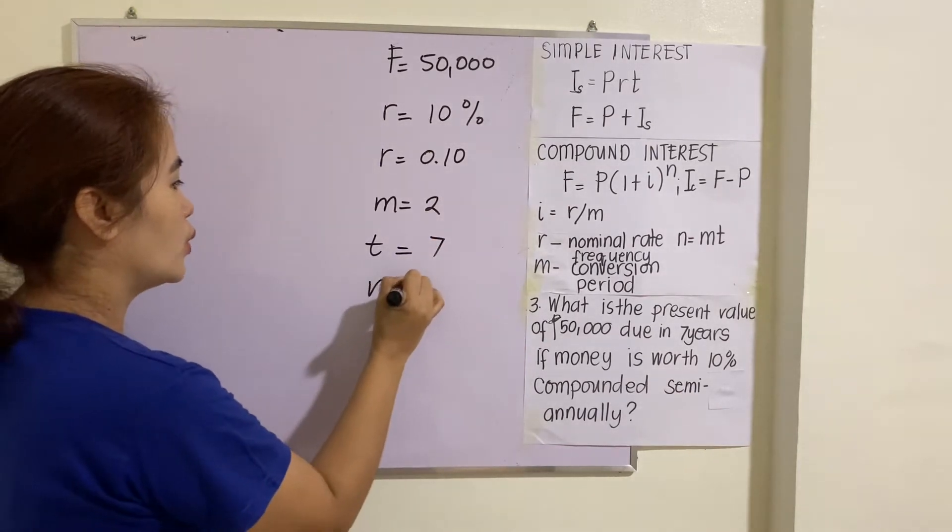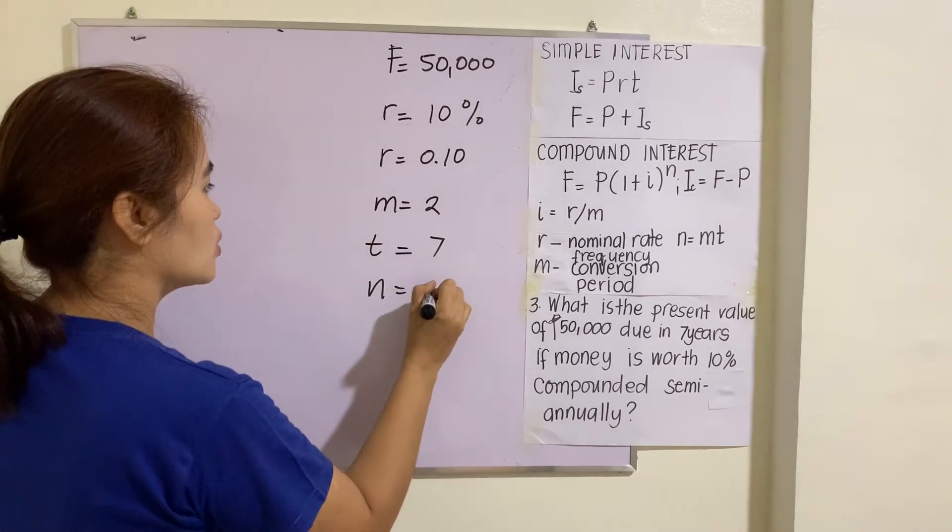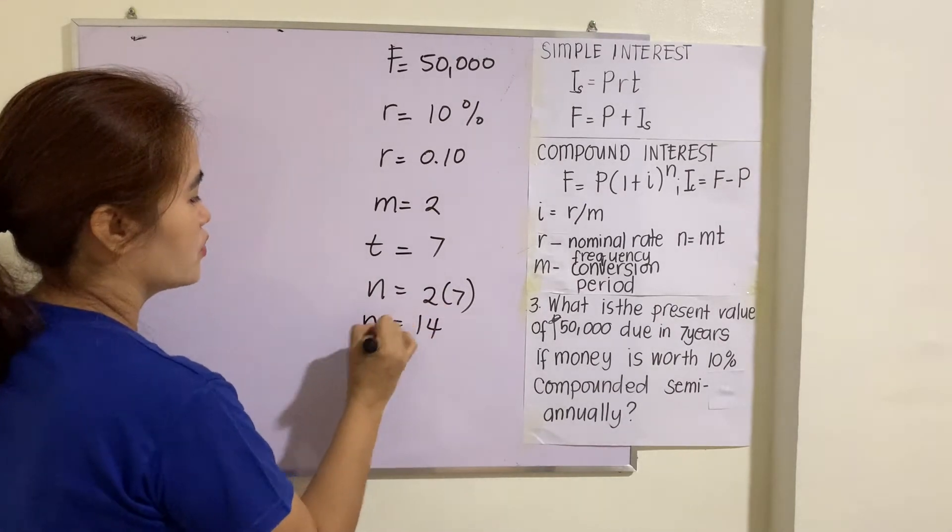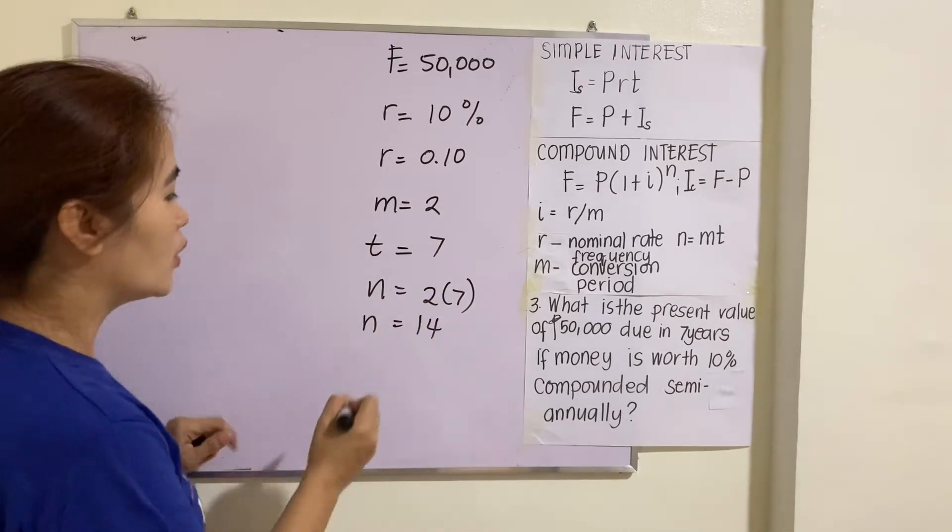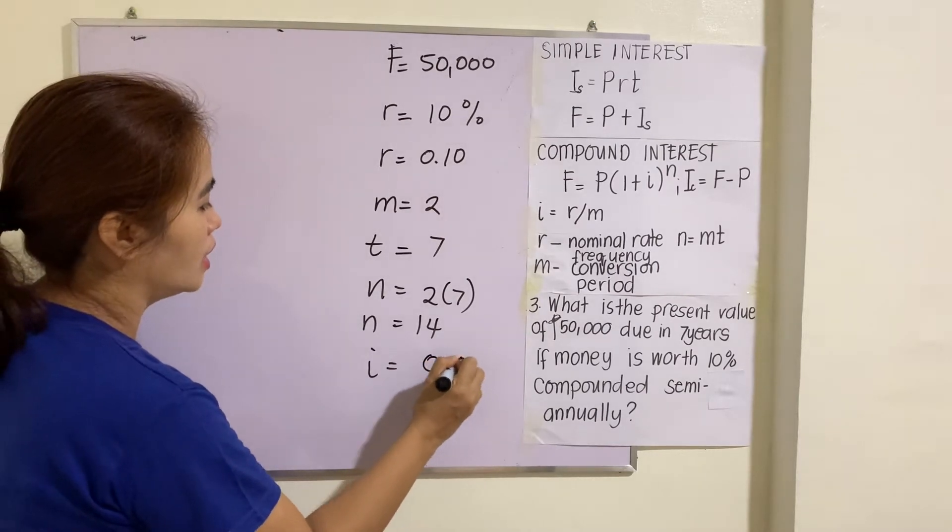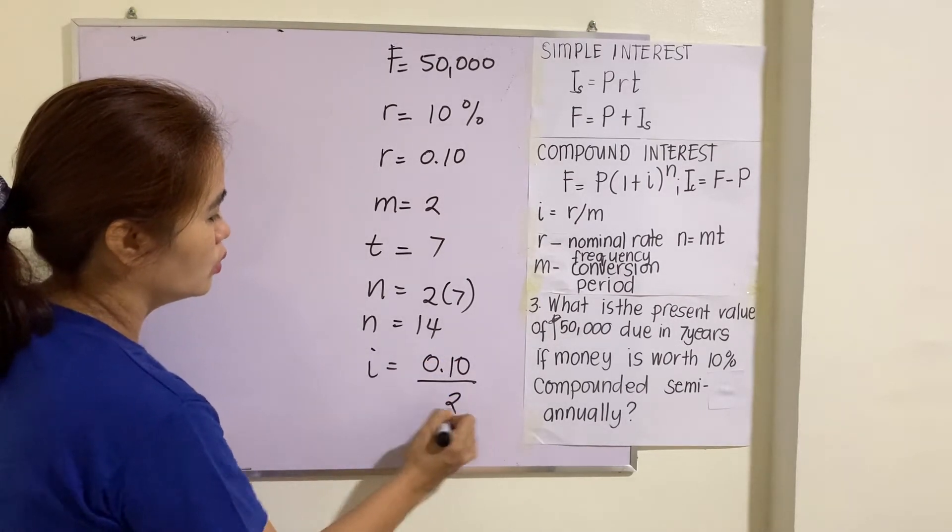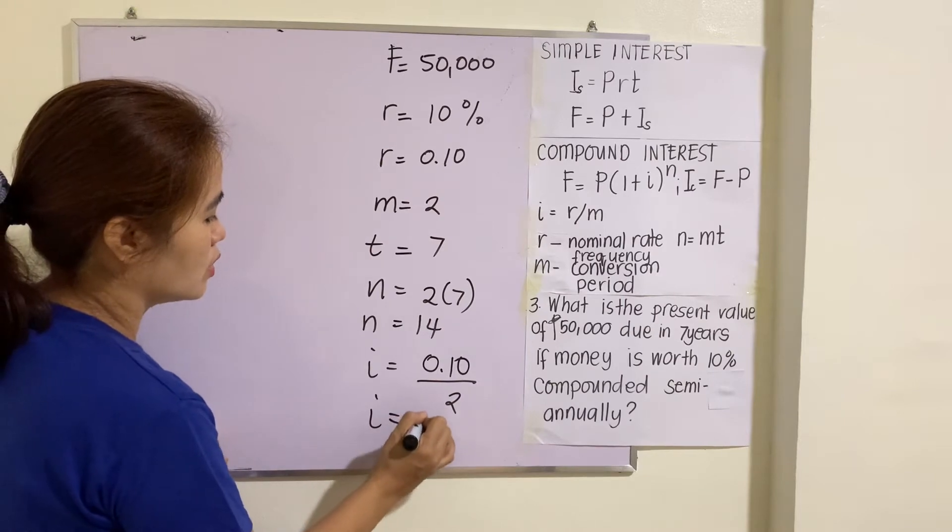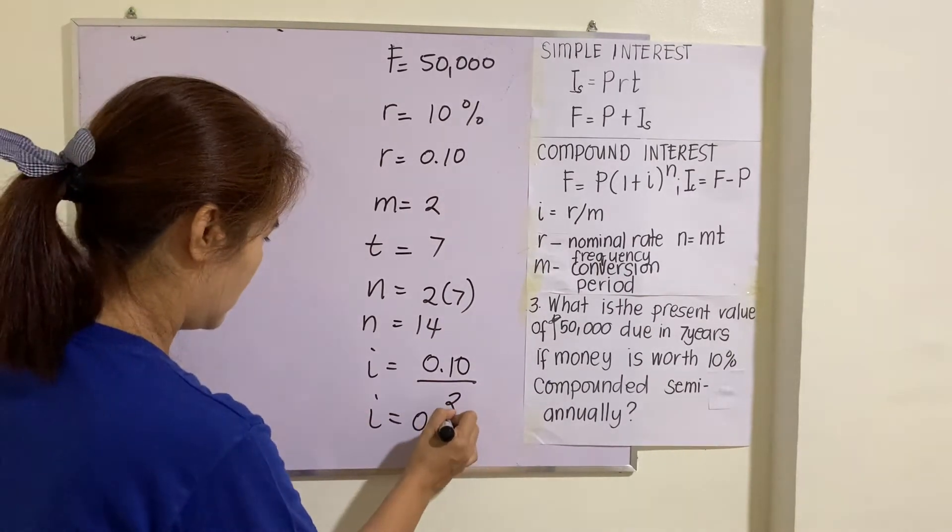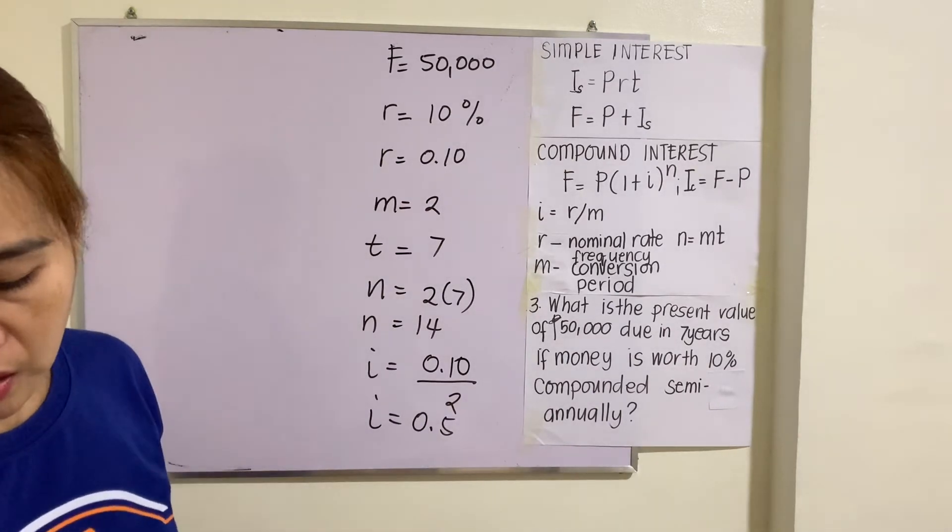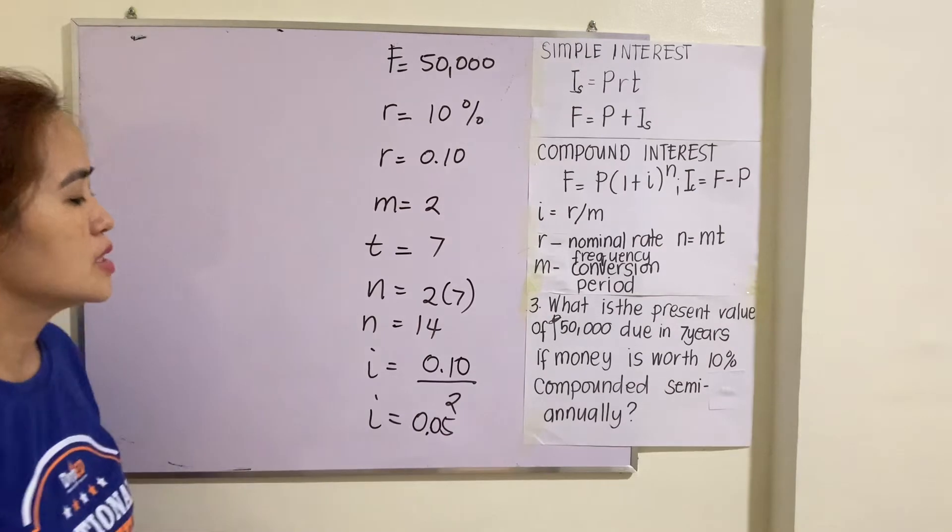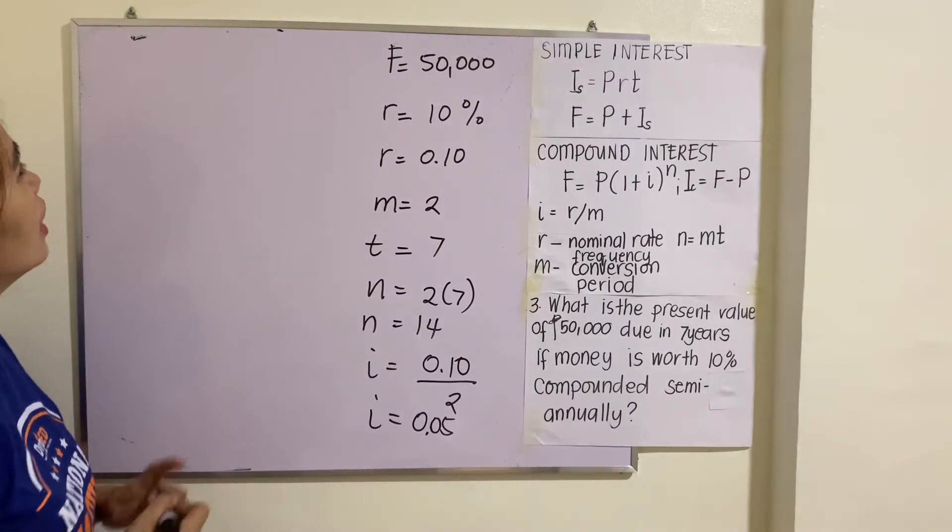So therefore we can solve for N which is 2 × 7 = 14. And then for your I, you have 0.10/2, so I = 0.05.